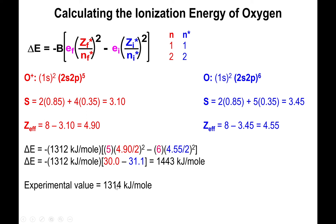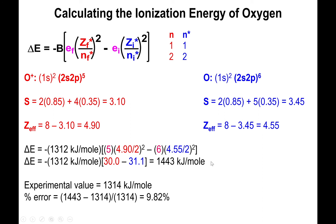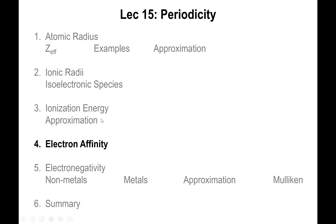What's remarkable is that all we used, aside from Slater's rules, is a periodic table. The periodic table gives us the electronic configuration, which we use to calculate the effective nuclear charge, and then the Balmer-Slater approximation gives us the ionization energy. Comparing to the experimental first ionization energy of oxygen, the percent error is less than 10% — not bad at all for such a simple approximation. This will be on the test, so get familiar with the process. Next we'll start talking about electron affinity.